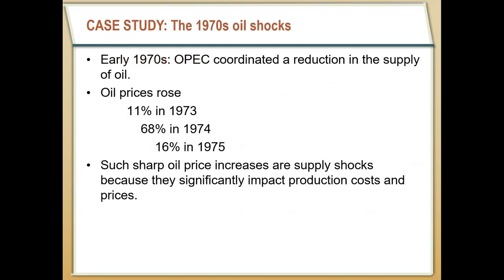It traditionally comes back to the episode in the 1970s when OPEC coordinated to reduce the supply of oil to increase global oil prices, and they were pretty successful. In 1973, oil prices rose by over 10%, then skyrocketed in 1974 by 68%, and then another 16% in 1975 — so the price of oil just about doubled in two to three years. Because oil and gas are so intertwined with the supply chain in most countries, this higher oil price meant it was costlier to produce everything in the economy and deliver goods. This higher oil price was a classic supply shock.